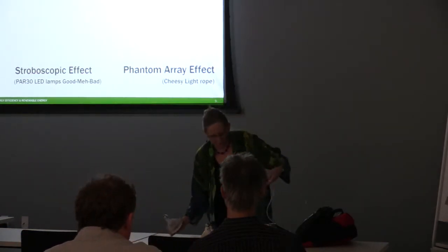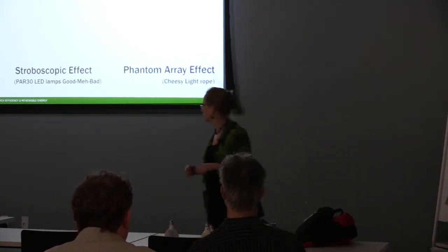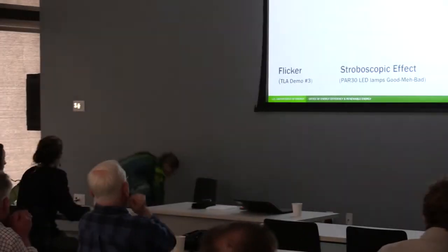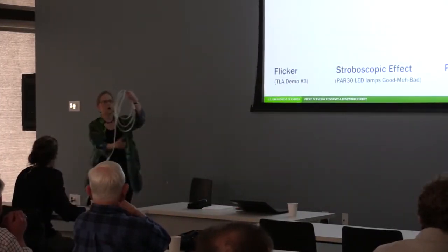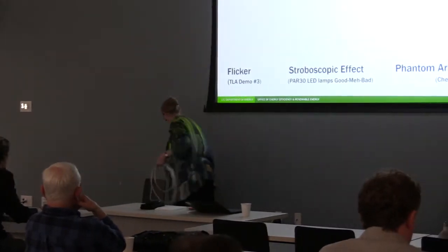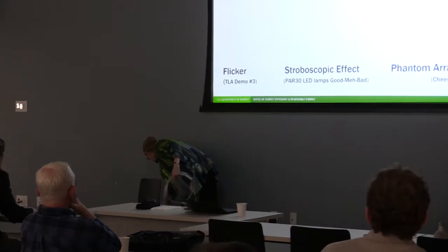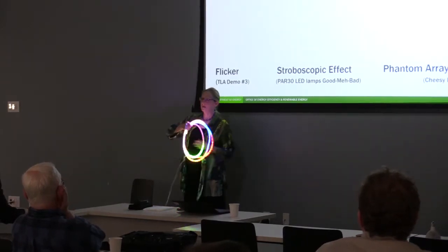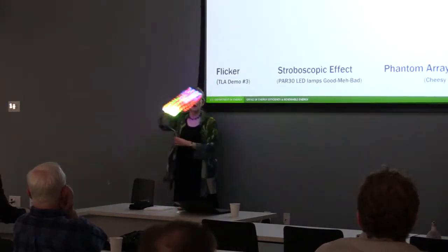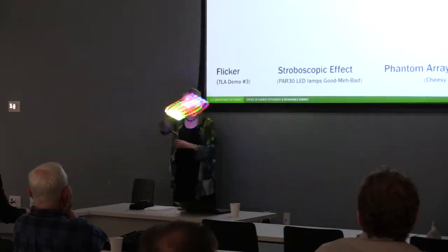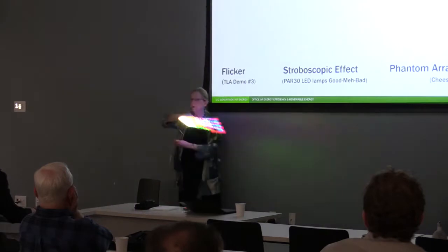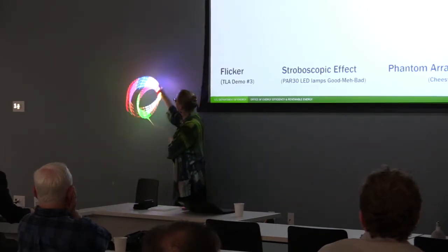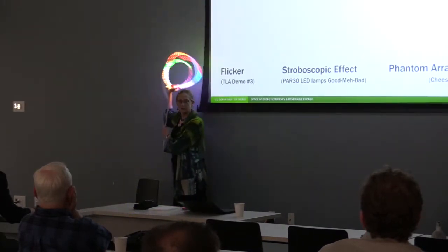I'm going to show you what the phantom array effect looks like. You know what rabbit tracks in the snow look like — discrete footprints that track across the snow. The phantom array effect does the same thing. As I wave this in space, I'm hoping you're seeing a lot of little discrete dots, not a smooth fan of light. That's the phantom array effect.